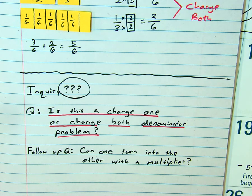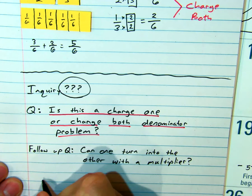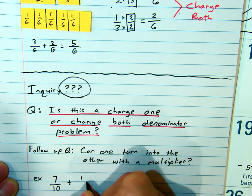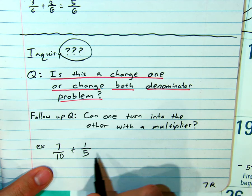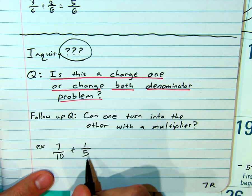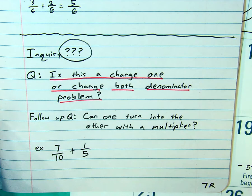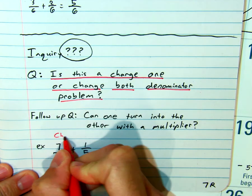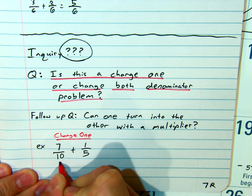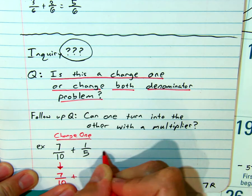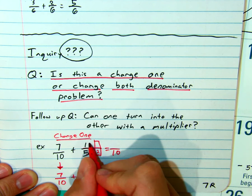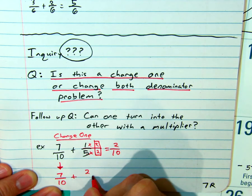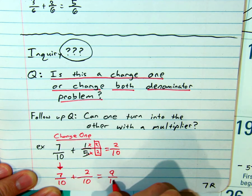So these are the two questions we have to ask ourselves. So let's grab a sample problem. Let's do seven tenths plus one fifth. Example. Seven over ten plus one over five. Let's look at both problems. Is this a change one or change both? Can one turn into the other? Can a ten multiply into a five? Not easily. What about a five into a ten? Yes. So this is an example of a change one. So for a change one, we keep the bigger, seven ten plus. And what we want to do is we want to convert our second fraction to become a denominator of ten. Five times what? Two. Two. One times two is two. Now we bring it down. Two tenths equals seven plus two is nine tenths. This is a change one.